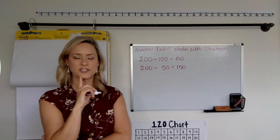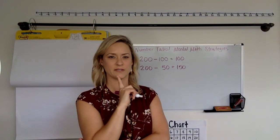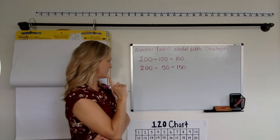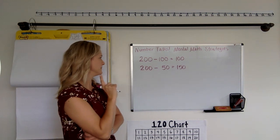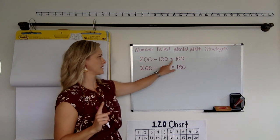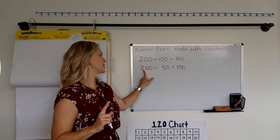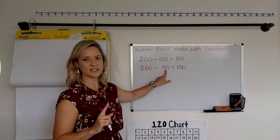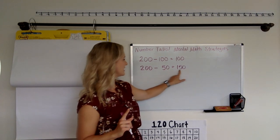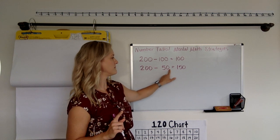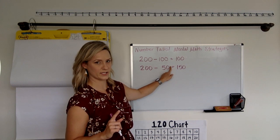So how did you know the answer to that was 150? I'm going to guess that some of you thought, hmm, 200 minus 100 would make 100. 200, and 200 minus just 50 would have to give us 50 more over here because we're taking off 50 less over here.